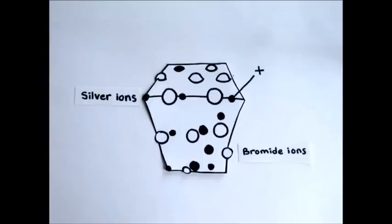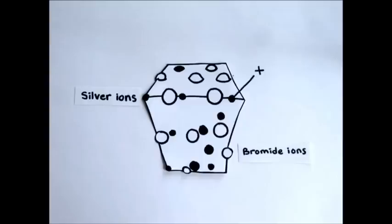In there, there are silver ions and bromide ions. Silver ions have one electron less than an uncharged silver atom, making it a positive charge. And bromide ions have an extra electron, giving it a negative charge. These electrical attractions hold them in place in a cubical arrangement.